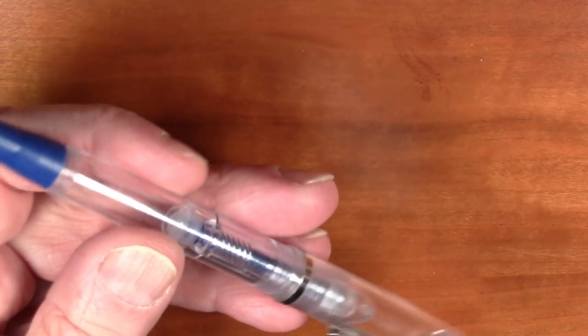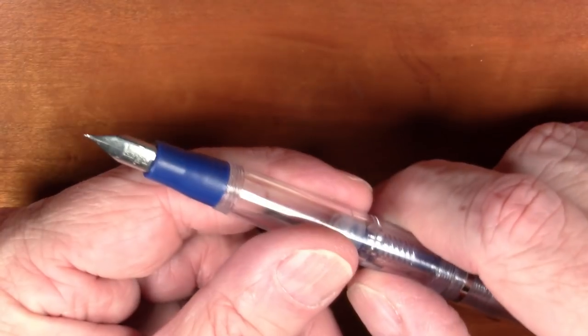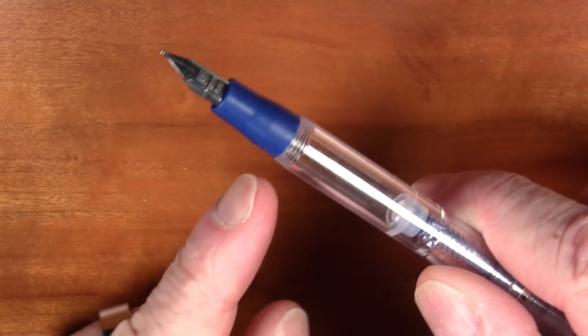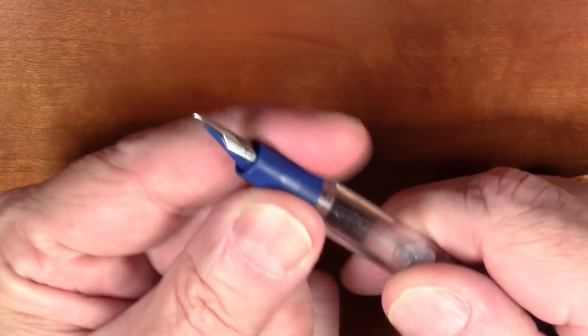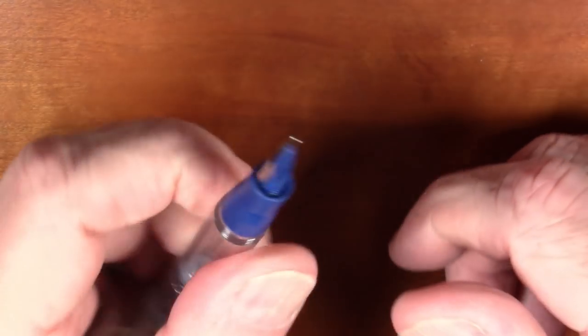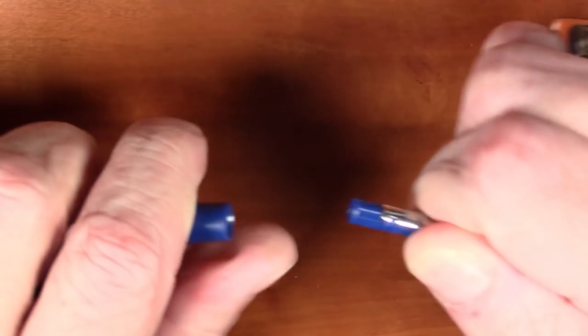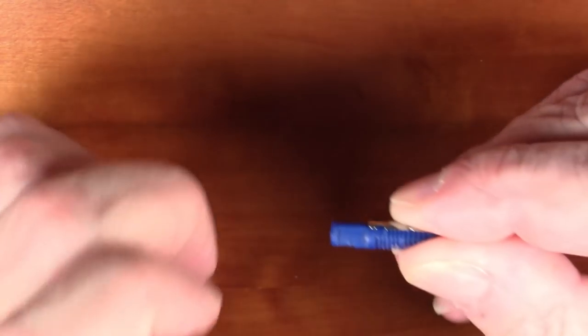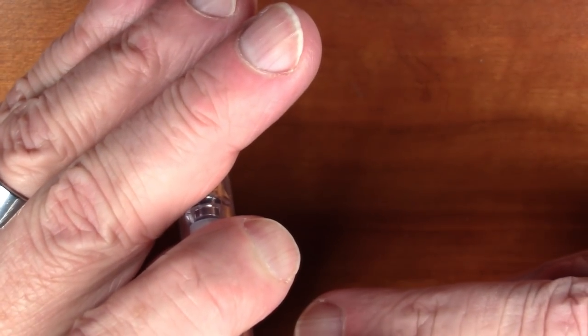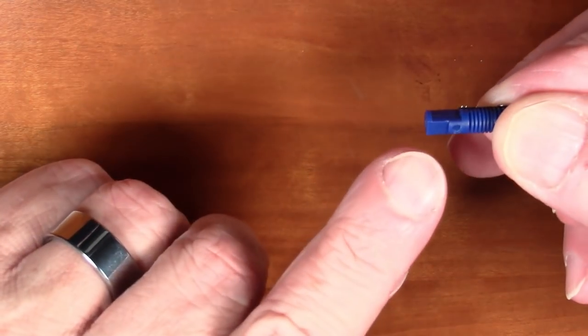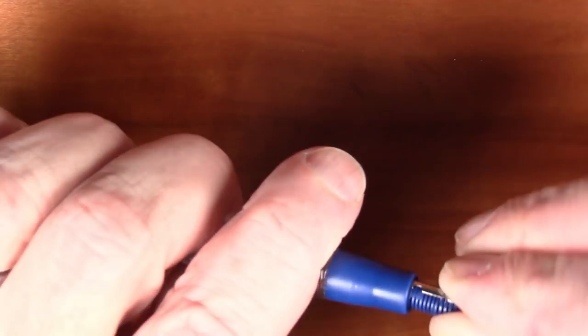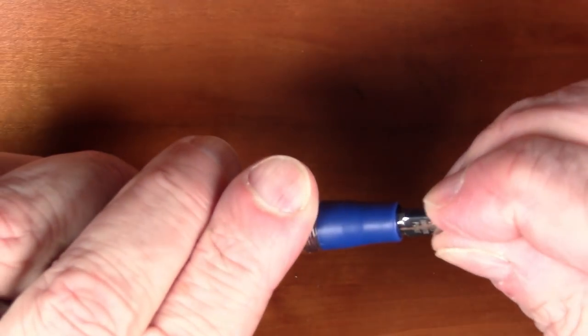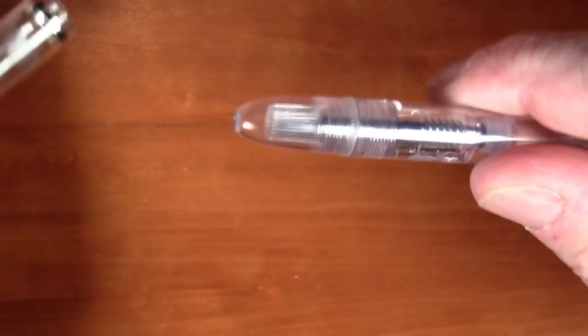In terms of disassembly, it can actually be done with this pen fairly simply. This here does not appear to unscrew, this appears to be glued on. However, the nib and the feed do pull right out, and that makes it nice for cleaning. When you put this back in, at first glance it would appear that it goes in any way, but it does not. There's a small little ledge there which has to line up with the flat side of the nib, so that does have to line up and then it pushes right back in.